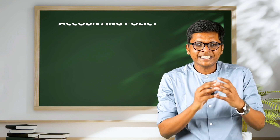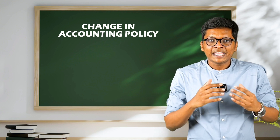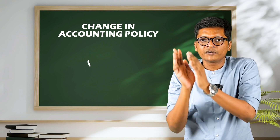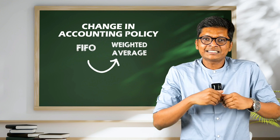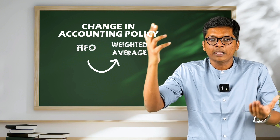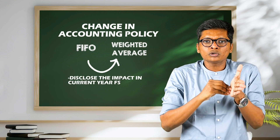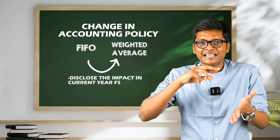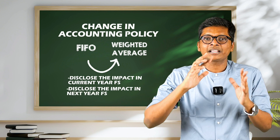For example, change in accounting policy. If there is a change in accounting policy — for example, FIFO to weighted average — the standard says you can change as per AS1. But if you change, disclose the impact in the current year financial statements and disclose the impact in the next year financial statements.